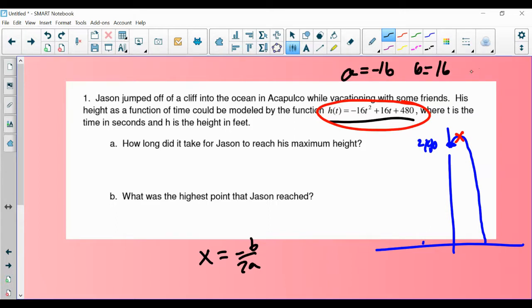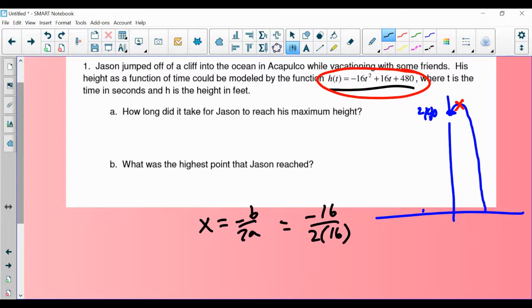And our a value in this problem is negative 16. Our b value in this problem is 16. And our c value is 480. So plugging in those numbers, we're going to have negative 16 over 2 times negative 16. We're going to be very careful to follow our order of operations. We want to simplify our numerator as much as possible and our denominator as much as possible. That would give us negative 16 over negative 32, which is positive 1 half.